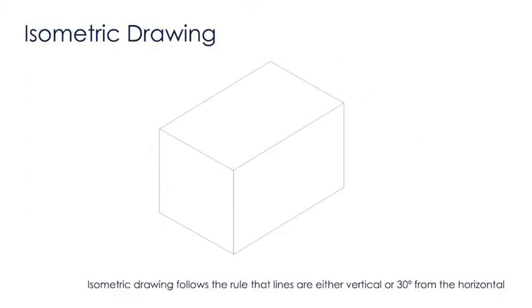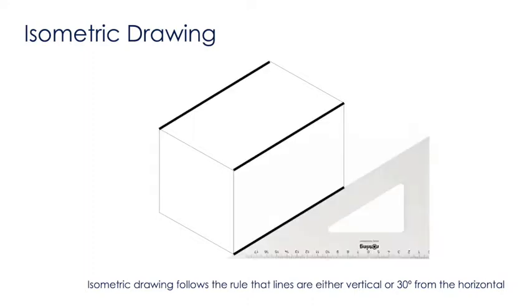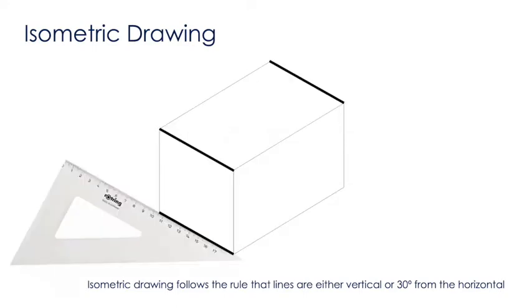Isometric drawings are made up from lines that either go vertically, 30 degrees in one direction, or 30 degrees in the other direction. Notice there are no horizontal lines in this isometric drawing.